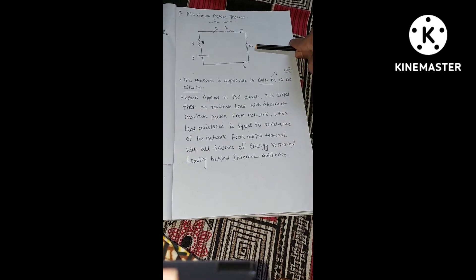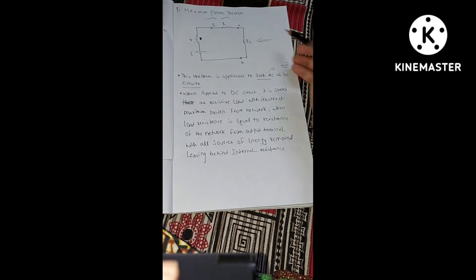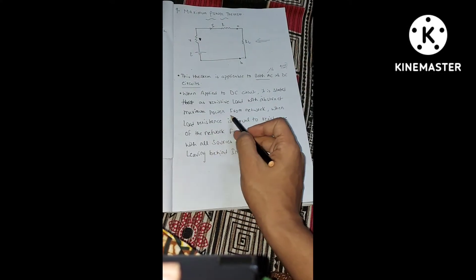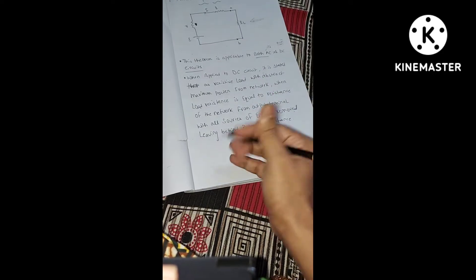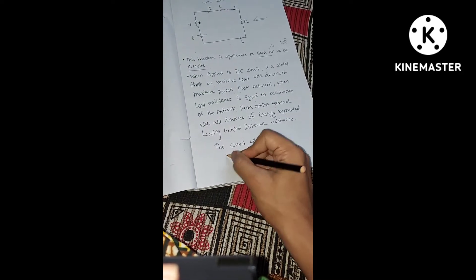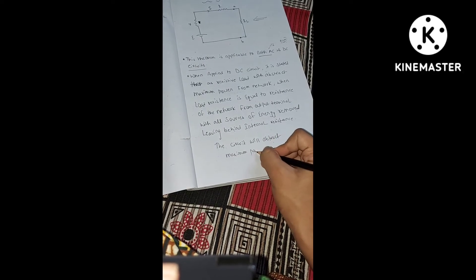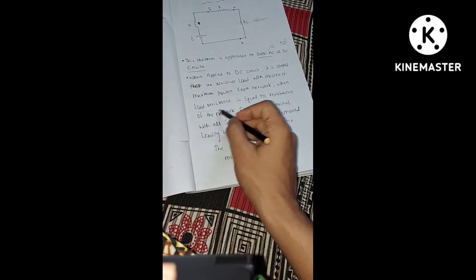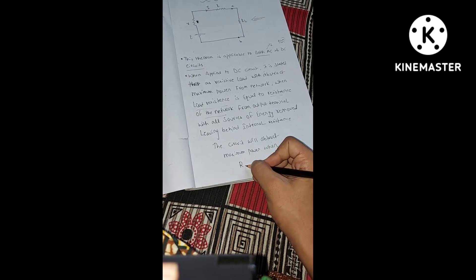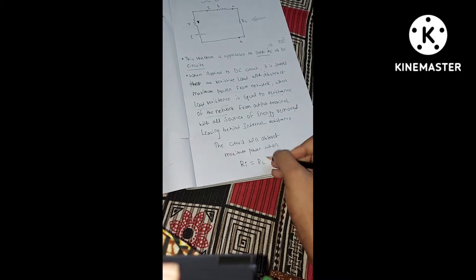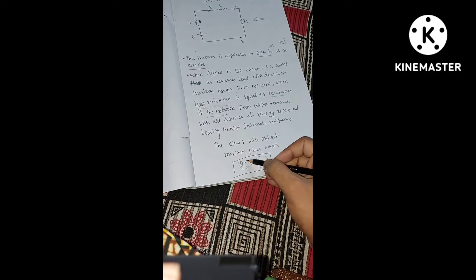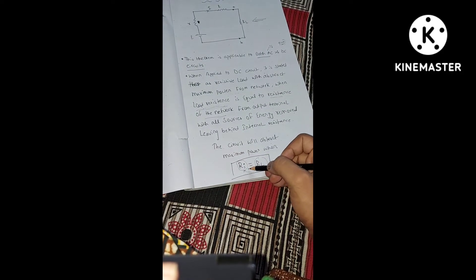What does this statement mean? When you view the circuit from the output terminal, the circuit will deliver maximum power when your load resistance RL is equal to the resistance of the network RI — that is, the load resistance is equal to the equivalent resistance RI.